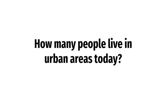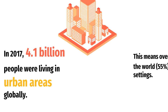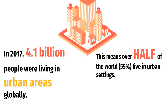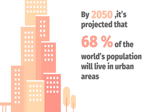How many people live in urban areas today? In 2017, 4.1 billion people were living in urban areas globally. This means over half of the world — 55% — live in urban settings. By 2050, it's projected that 68% of the world's population would live in urban areas.